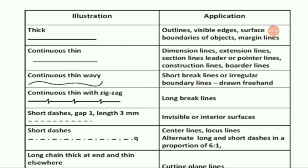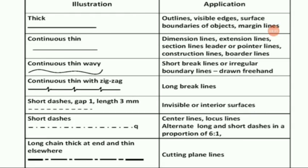Continuous thin wavy lines are used for short break lines or irregular boundary lines, and are drawn freehand. Continuous thin with zigzag lines are used for long break lines. Short dashes with a gap of 1 mm and length of 3 mm are used for understanding invisible or interior surfaces in a drawing.